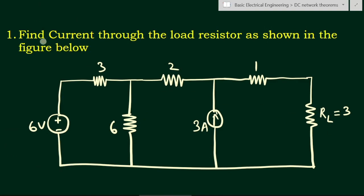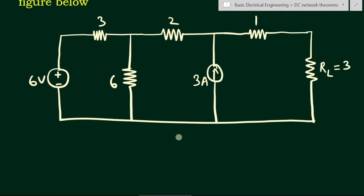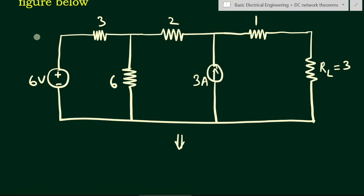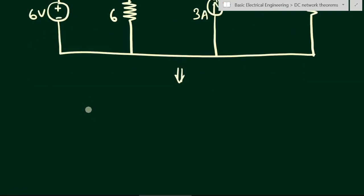Now let us solve a problem. We have to find the current through the load resistor RL as shown in the figure. Using source conversion theory, we can convert this circuit. We have a 6-volt source in series with a 3-ohm resistance. We can convert this voltage source with series resistance into a current source with parallel resistance.